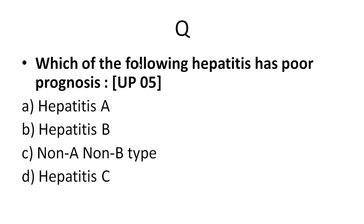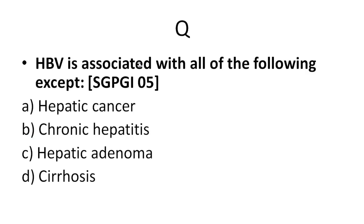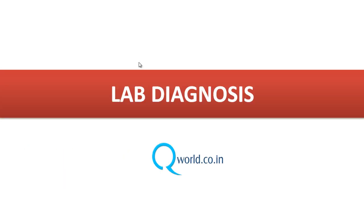Which hepatitis virus has the poorest prognosis? Between B and C, the answer is hepatitis B virus. Hepatitis B virus is associated with hepatocellular carcinoma and chronic hepatitis — both correct. Hepatic adenoma is a benign tumor and hepatitis B does not cause it; so the answer is hepatic adenoma as the exception. In the next session we will look at laboratory diagnosis of hepatitis viruses.